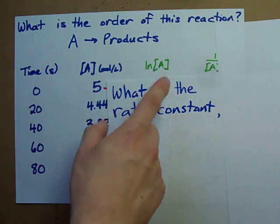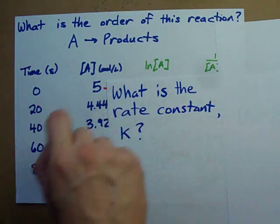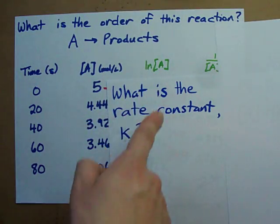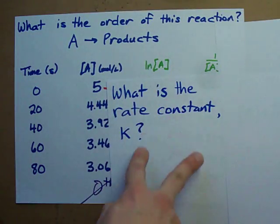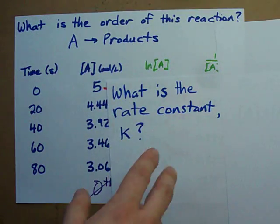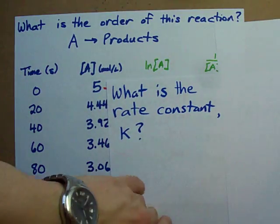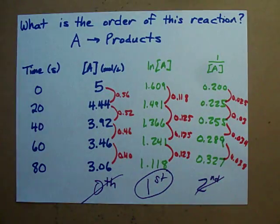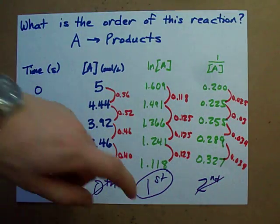In that case, I want you to make two columns, ln A and 1 over A, crunch the numbers for the entire columns, and then figure out which set of data has the first differences being constant. Luckily for you, I've already done that and found that it's a first order reaction.